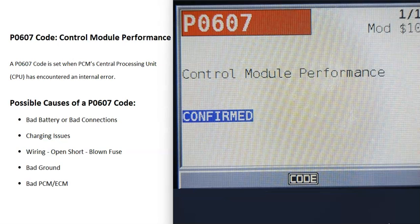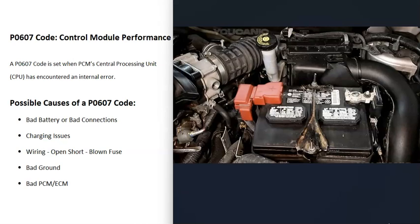What are some possible causes of a P0607 code? The first thing that can cause this is a bad battery or bad battery connections. All these computer modules need a good, stable power source, and if there's anything wrong with that it's going to cause issues and errors. So the first thing to do is check your battery — make sure it's got a good charge and that your battery terminals are making good contact and aren't corroded.